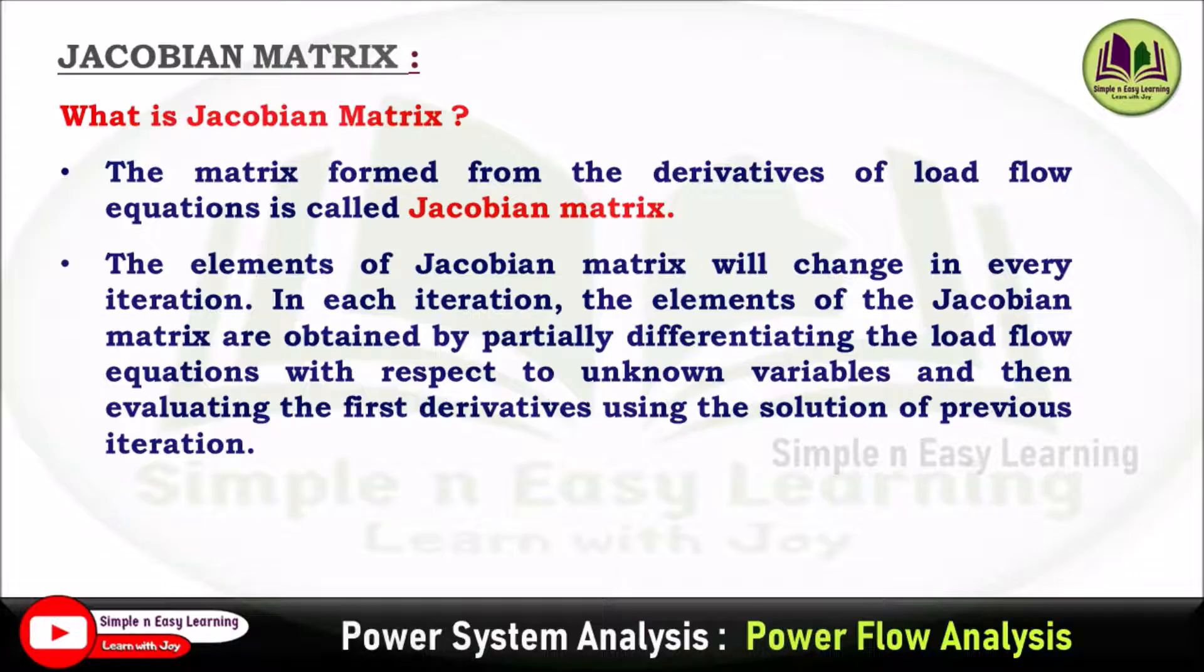The elements of the Jacobian matrix are obtained by partially differentiating the load flow equation with respect to unknown variables, and then evaluating the first derivative using the solution we obtained from the previous iteration.